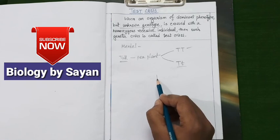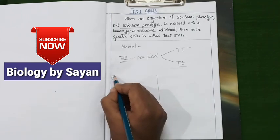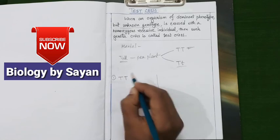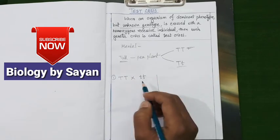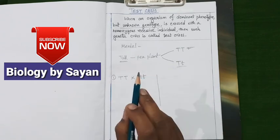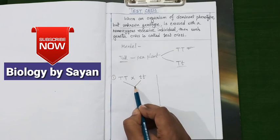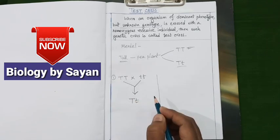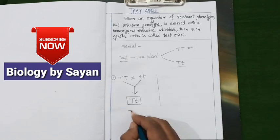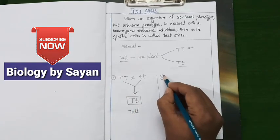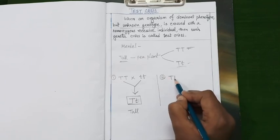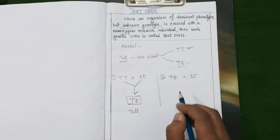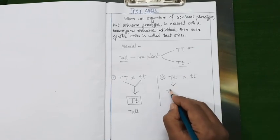In the first case, we cross the homozygous dominant allele (capital T, capital T) with a homozygous recessive parental combination. This fusion produces only a single type of organism — the hybrid tall — so phenotypically all offspring will be tall. In the second case, the hybrid (capital T, small t) is crossed with the homozygous recessive parent (small t, small t). The hybrid produces two types of gametes: capital T and small t.